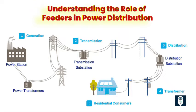Fourth, for fault detection and isolation: feeders are equipped with protective devices, such as fuses, circuit breakers, and relays, to detect faults or abnormalities in the distribution network. These devices monitor the current, voltage, and other parameters to identify faults such as short circuits or overloads. When a fault is detected, the protective devices isolate the faulty section of the feeder, minimizing the impact on the rest of the system and allowing for prompt repairs.